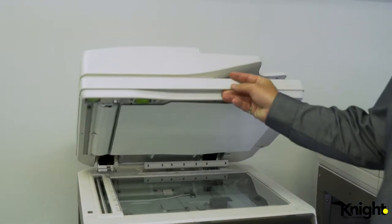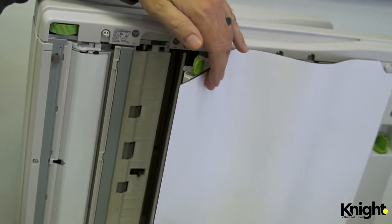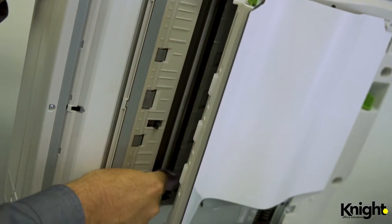If you notice lines on the second side of a copy, lift the document feeder and press the tab at the top left corner to reveal the second scanning lens. Clean the lens and close the white cushion.